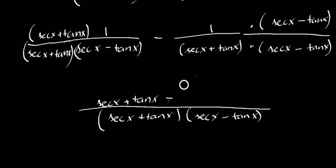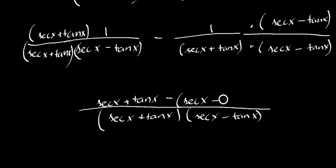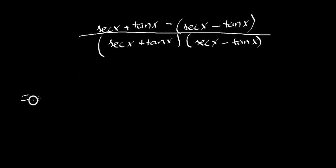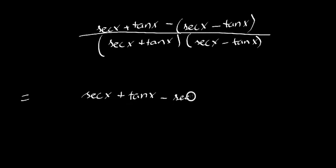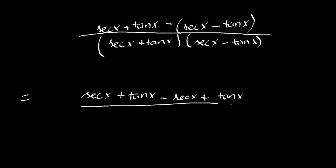One times secant x — I recommend you put it in brackets after you distribute, because you need to distribute this minus sign. On top, you still have your secant x plus tangent x. And if you distribute, you get minus secant x — minus times a minus is a plus tangent x. And you still have your denominator.